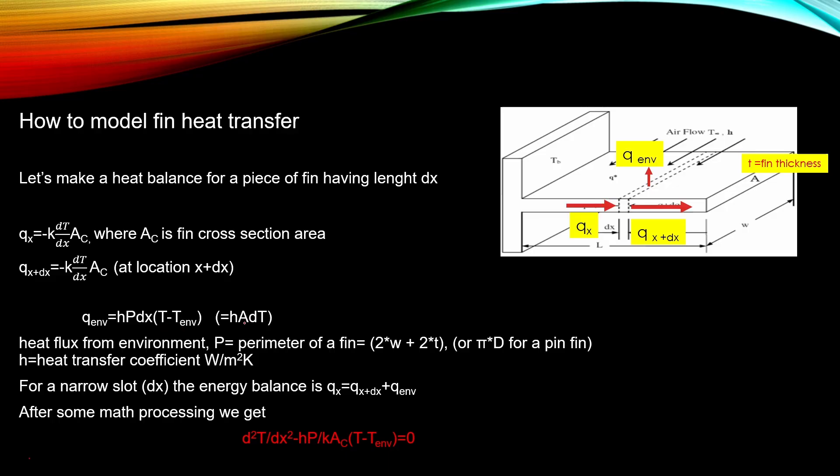And this surface area is now the perimeter of the slot times this dx. And the perimeter is 2 times the width of the slot plus 2 times the thickness of the slot.